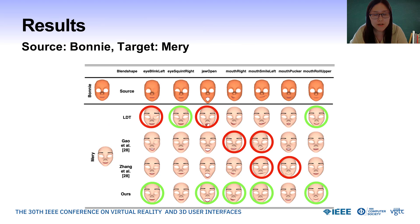This is the result for the avatar. The blend shape eye blink has some issues when obtained by the LDT method, such as the upper eyelid not reaching the lower eyelid and the edge of the upper eyelid not being smooth. Additionally, the blend shape obtained by Gauss and Zhang's method shows mouth deformation instead of eyelid deformation. However, our method does not have these issues, though the upper eyelid of the blend shape obtained by our method sometimes does not quite reach the lower eyelid.